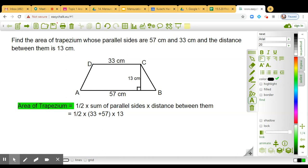So this comes out to be half into, what is 33 plus 57? 90. It is 90 into 13. Simplify this expression, so it comes out to be 45 into 13.